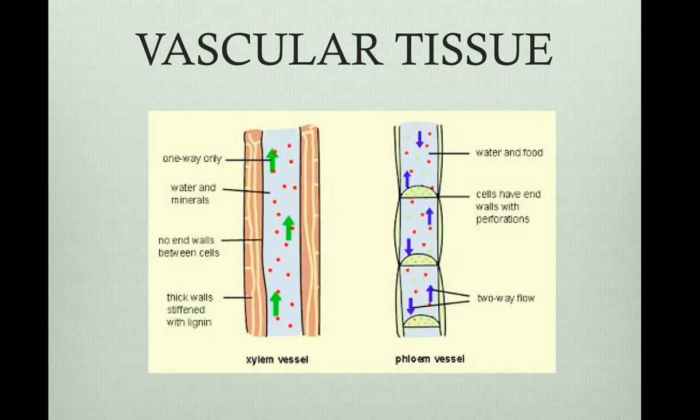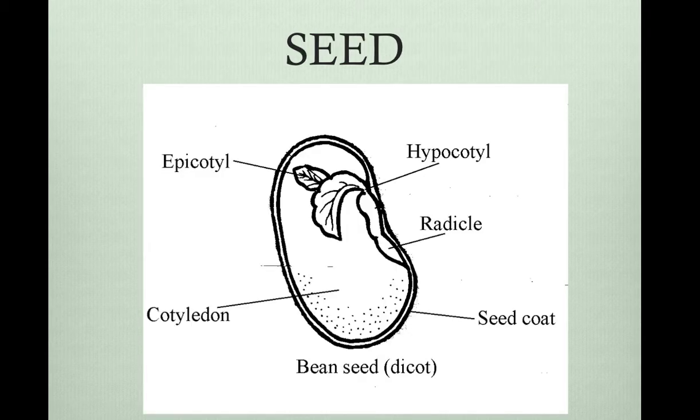Vascular tissue is when cells join into tubes that transport water and nutrients throughout the plant. You may be familiar with the xylem and the phloem, and we'll talk more about those later. The seed is the plant embryo, including a protective coat and a food supply. The seed is actually very similar to an egg because it contains an embryo, a food supply, and a protective coat.